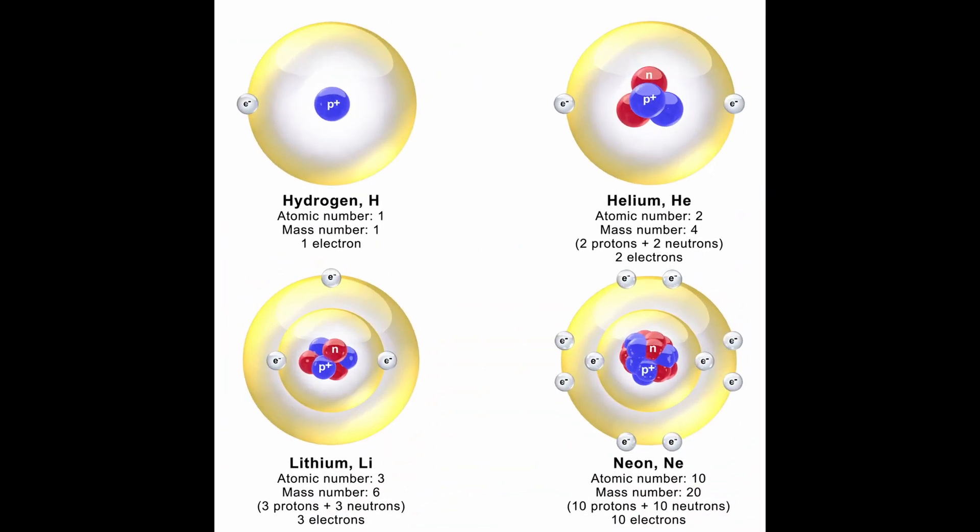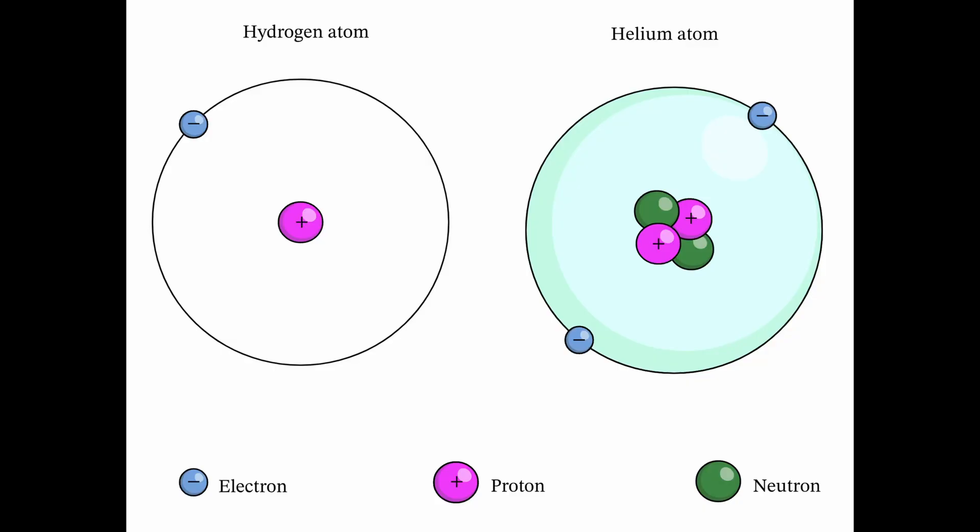Electrons occupy a space around the nucleus. All we need to know is that nuclear fusion means the combination of particles that make up the nucleus of an atom — protons and neutrons. An element gets its identity from the number of protons inside the atom's nucleus, and every single different element has a different number of protons. The Sun is made up of mostly hydrogen and helium. Hydrogen has only one proton in its nucleus, and helium has two protons and two neutrons.